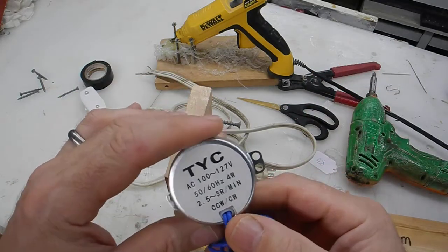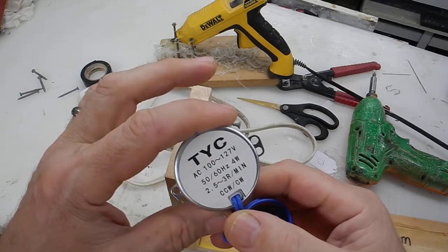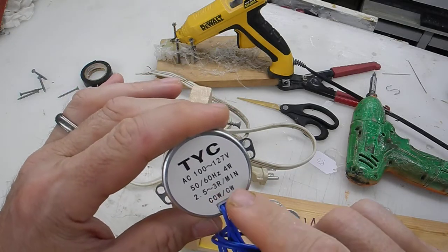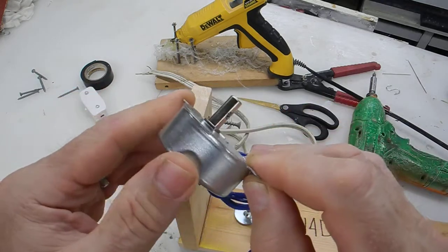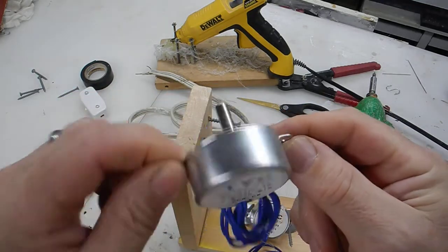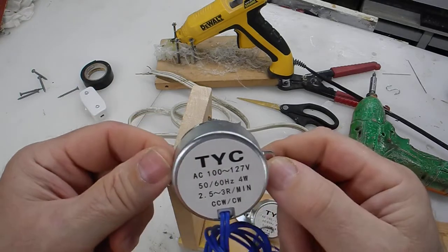They come in different speeds. This is a 2.5 to 3 revolutions per minute. That's very slow. If you're applying epoxy to a lure and it's just creeping along, it's going to drive you nuts.